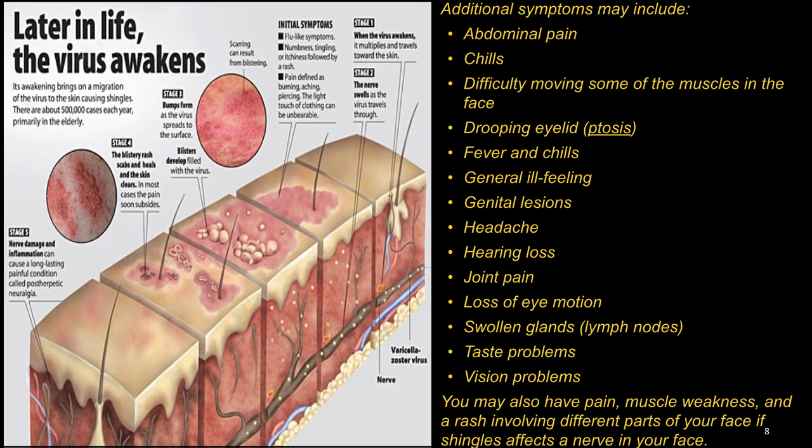Additional symptoms may include abdominal pain, chills, difficulty moving because of the pain, drooping of the eyelid if the rash is on the face, fever, general ill feeling, genital lesions, headache, hearing loss, joint pain, loss of eye motion, swollen glands or lymph nodes, taste problems and vision problems.